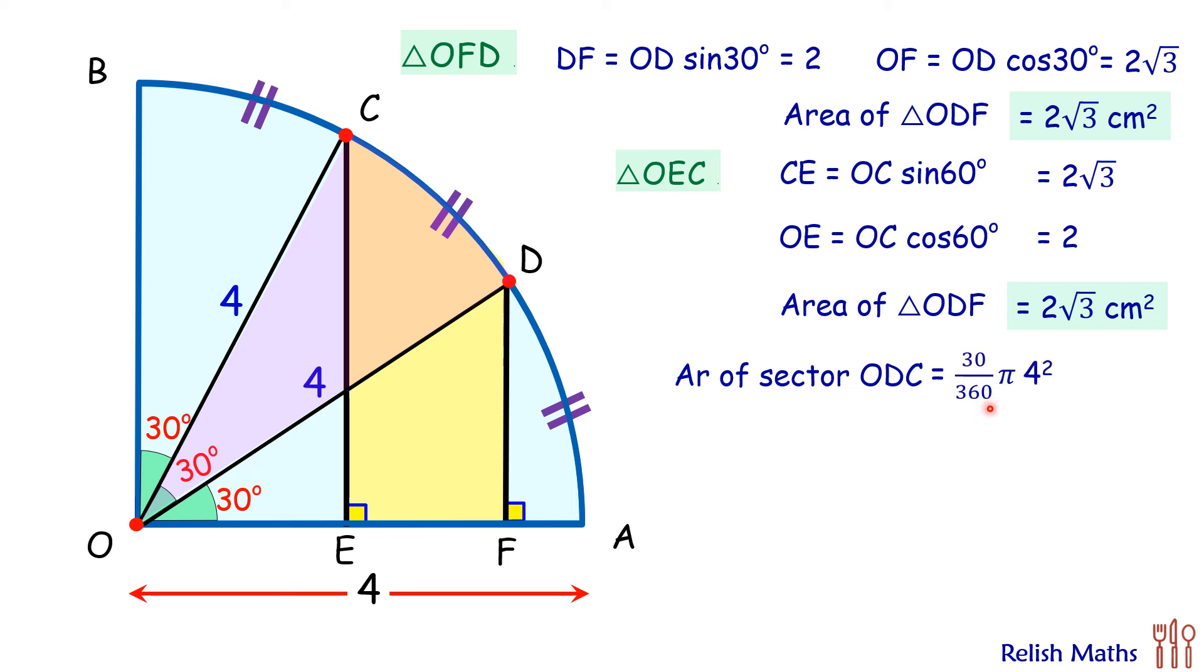So my answer will be 30 upon 360 into pi r square. Solving it we will get area of the sector as 4 pi by 3 cm square.